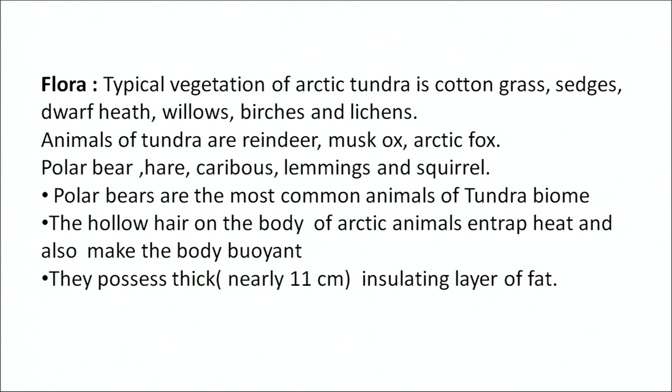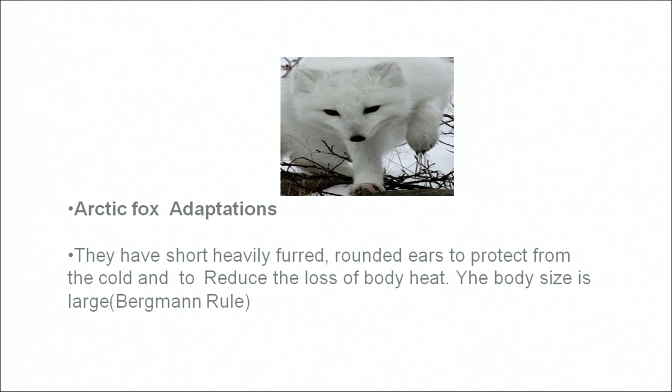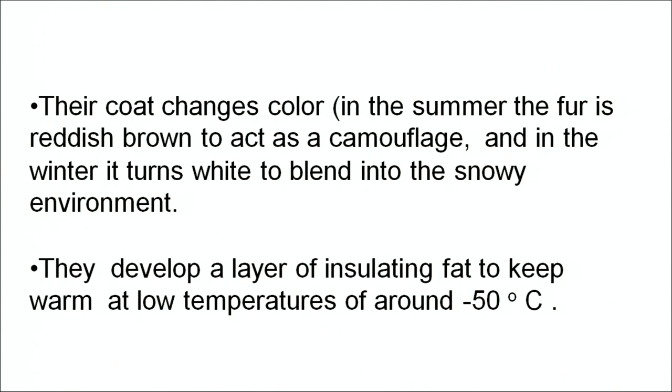The polar bear is the most common animal of the tundra biome. The hollow hair on the body of arctic animals entraps heat and also makes the body buoyant. They possess a thick, 11-centimeter insulating layer of fat. The arctic fox is highly adapted to the polar region — its coat changes colour: in summer the fur is reddish-brown to act as camouflage on land, and in winter it turns white and blends into the snowy environment. They develop a layer of insulating fat to keep the body warm at temperatures around minus 50 degrees Celsius.